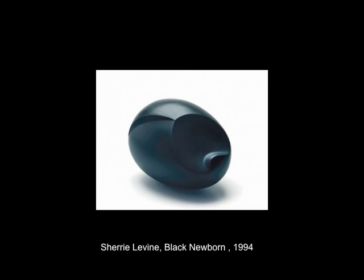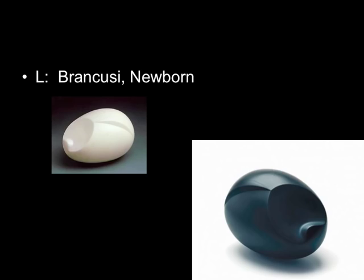She also takes aim at the pantheon of modernist artists in the early twentieth century — not only Duchamp, but also big names like Constantin Brancusi. Here is her 'Black Newborn,' a marble sculpture that's basically a replica of a sculpture Brancusi did in the early twentieth century, also called 'Newborn.' There's a whole series of these egg-shaped images — on the left is Brancusi's Newborn in white, and he did versions in black as well, and she does a kind of recreation of that.